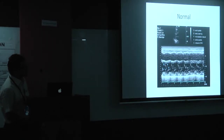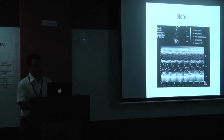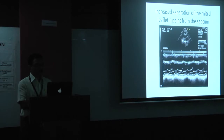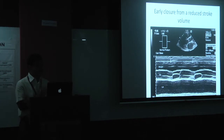In the normal M-mode across the LV in the basal segment on parasternal long axis transthoracic echo, you can see the septum, the inferolateral wall, and the mitral leaflet E wave. Note the proximity of the E point to the septum — that's quite normal. In dilated cardiomyopathy, there is quite a bit of distance — an increased E-point septal separation. On M-mode of the aortic valve, there is an early closure due to reduced stroke volume in dilated cardiomyopathy.